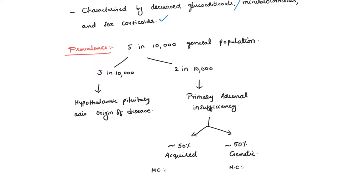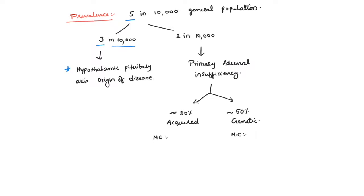It is seen in about 5 individuals in 10,000 of the general population, among which 3 in 10,000 people have a defect in the hypothalamus or in the pituitary gland, causing decreased production of ACTH, which in turn leads to decreased production of cortisol or steroids by the adrenal gland.